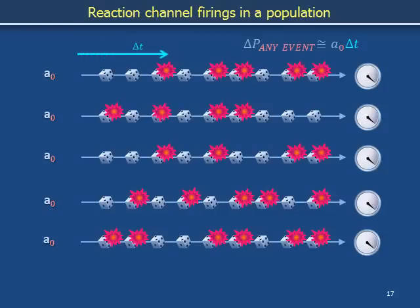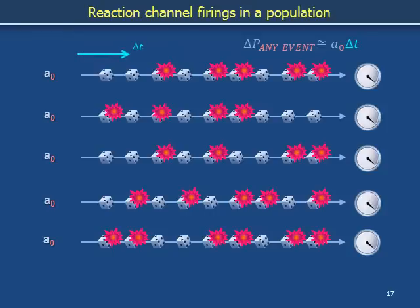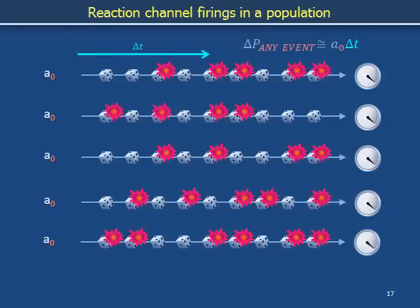Delta T labels the time interval of observation. Within a time interval delta T, some of the timelines from a population of cells will have reactions, while others will only have dice rolls that do not lead to reactions. The fraction of the population of cells that has undergone a reaction during a brief interval delta T is delta P any event, roughly equal to A0 times delta T. The population fraction is proportional to the time rate A0 and proportional to the duration of observation delta T.